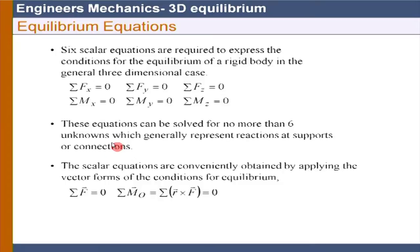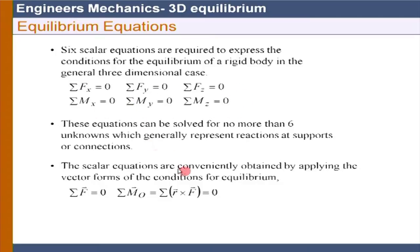It is not mandatory to always use 3 force equations and 3 moment equations. You can augment one of the force equations with another moment equation. The main idea is how we get scalar equilibrium equations: we make the resultant force on the rigid body equal to zero and the resultant moment at a particular point O equal to zero.